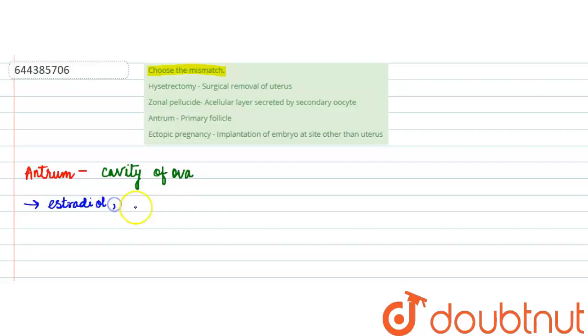Another function is that it is required for the osmolarity of the oocyte development. That means that it maintains the osmolarity of the oocyte.